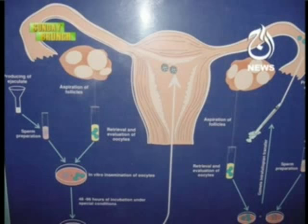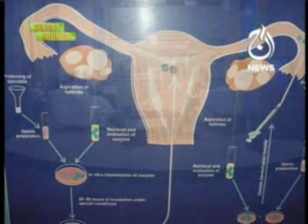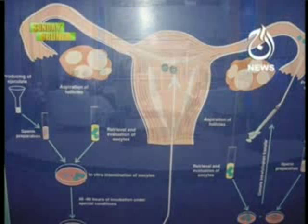If a tube is blocked, damaged, or not available, it can still be treated, because there is no need for the tube. We retrieve eggs from the ovaries from outside, take the sperm, and the union of the sperm and the egg takes place in the laboratory. The fertilized embryo is then transferred into the uterus. So there are two benefits: the fallopian tube is bypassed, and the union of sperm and egg is facilitated.